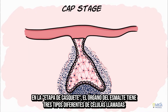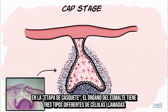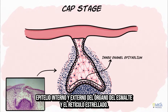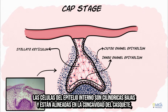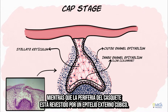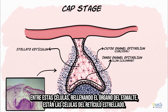In the cap stage, the enamel organ comprises three different types of cells called the inner enamel epithelium, outer enamel epithelium, and the stellate reticulum. Inner enamel epithelial cells are low columnar and line the invagination of the cap on the inside, while the periphery of the cap is lined by cuboidal outer enamel epithelium. In between these cells, filling the enamel organ, are cells called the stellate reticulum.